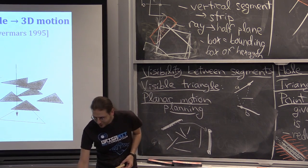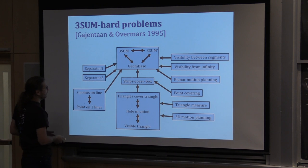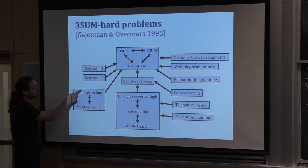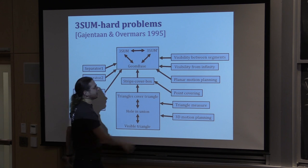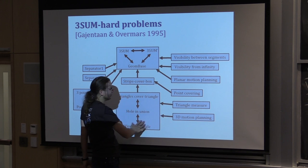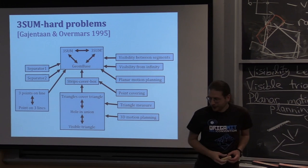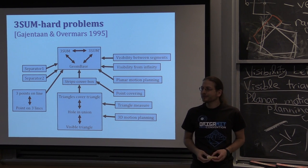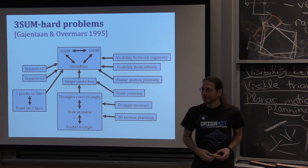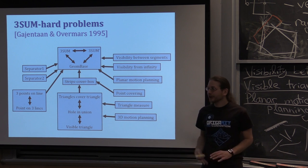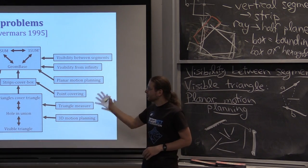That completes the Gajentaan-Overmars paper. We started with base problems — 3-SUM, 3-SUM′, geom base, two versions of separator — then degeneracy testing, strips-cover-box, triangles-cover-triangle, hole-in-union, visible triangle (all equivalent), point covering, planar motion planning, and 3D motion planning. The reverse directions — reducing these problems back to 3-SUM — are mostly open, but building evidence in both directions would strengthen the conjecture.